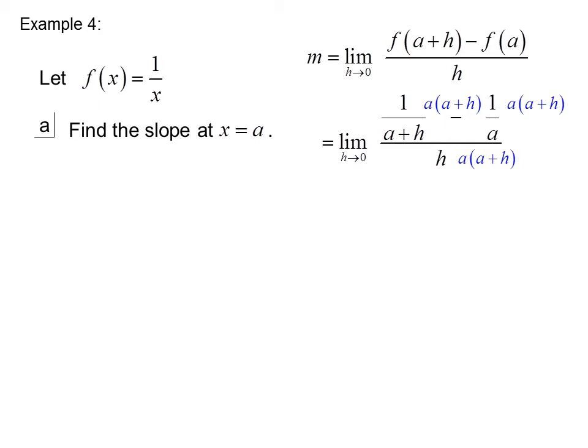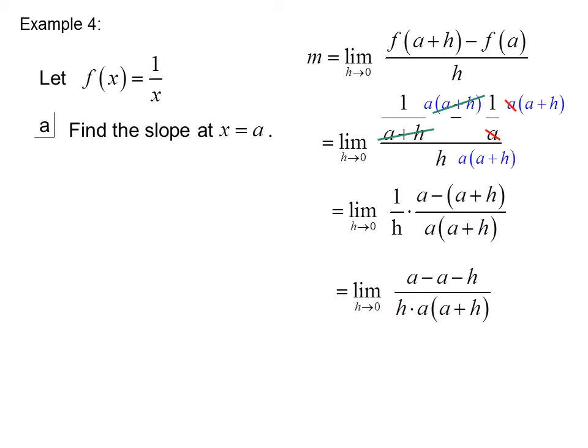Now we multiply by the common denominator of the little fractions to clear the fractions. The limit as h goes to 0 of 1 over h times (a minus (a plus h)) over (a times (a plus h)). We clear the parentheses in the numerator and get the limit as h goes to 0 of (a minus a minus h) over (h times a times (a plus h)).